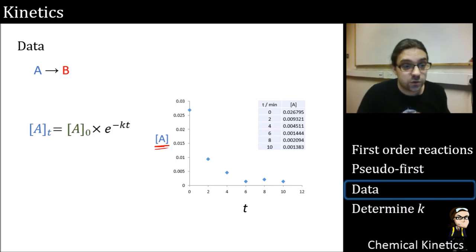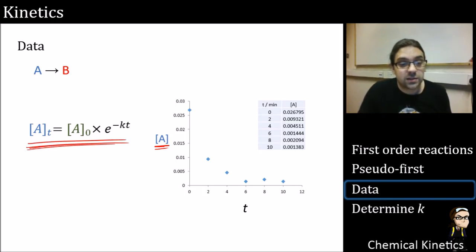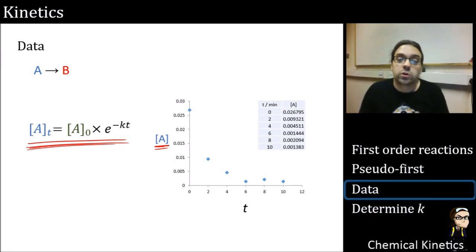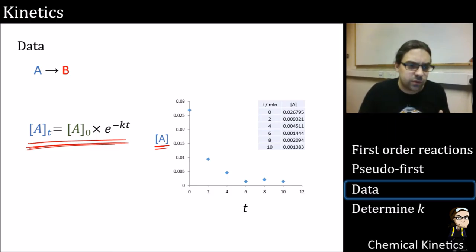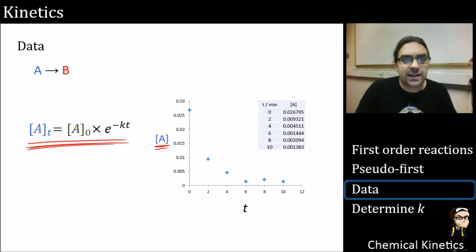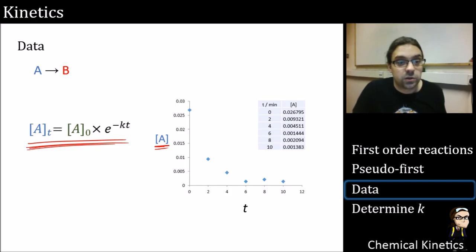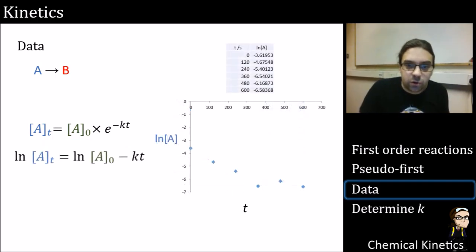The integrated rate equation — which comes from our rate law by applying integration — predicts and models how the concentration changes. It becomes quite useful because if we take a log of it, we get a linear equation.